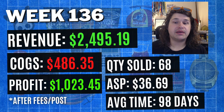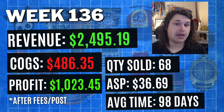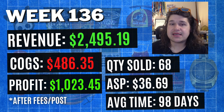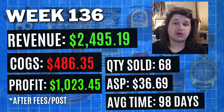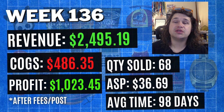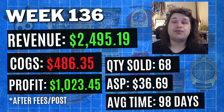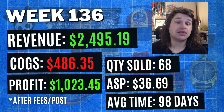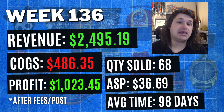In terms of the entirety of the week, volume has been down but ASP has been up. We did 68 sales, a total of $2,495 worth of revenue. Cost of goods was $486.35, profit being just over $1,000. ASP was $36.69 and average cycle time was 98 days.